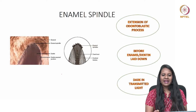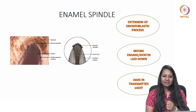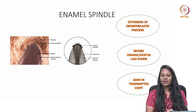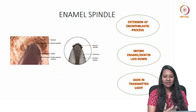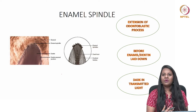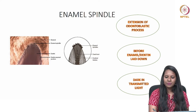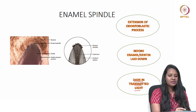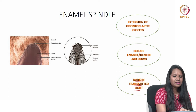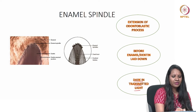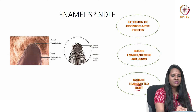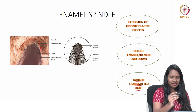Moving to enamel spindles: these are extensions of odontoblastic processes into the enamel surface before enamel or dentin is laid down, and they appear dark in transmitted light. Numerous enamel spindles can be seen histologically, representing odontoblastic processes extending toward the enamel surface.